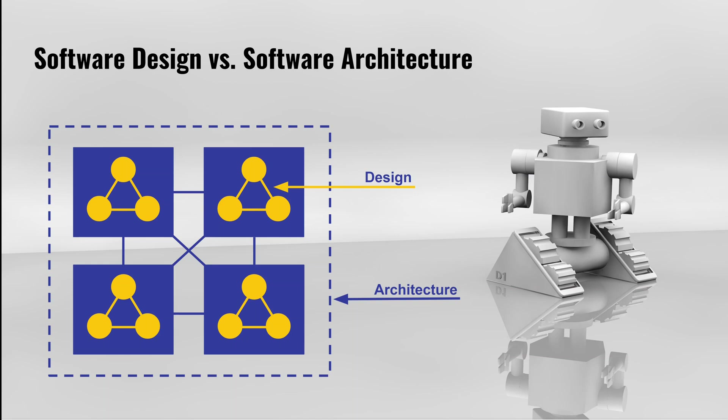By the way, I have not come across any clear distinction between software architecture and software design. Personally, I make the distinction as follows: software architecture I consider to be about the structures between the different processes in the system. By processes I mean system processes such as applications or services — so in the diagram here, it is the structures between the blue processes.